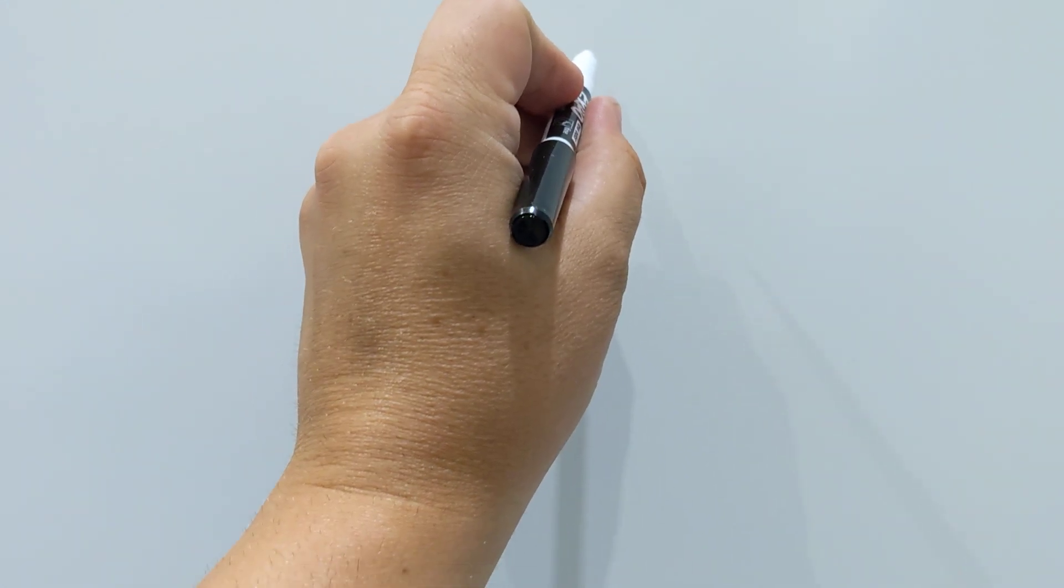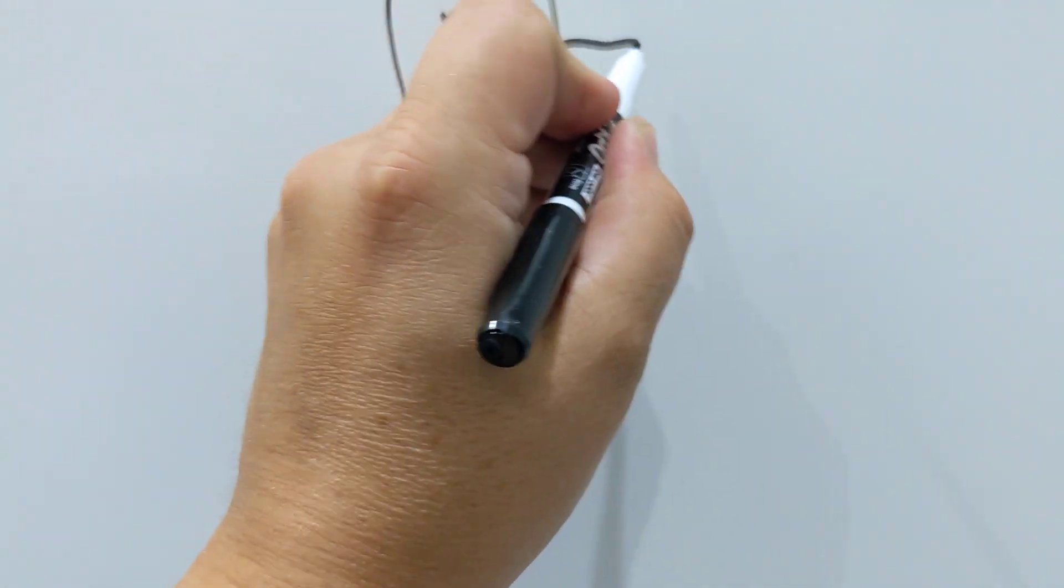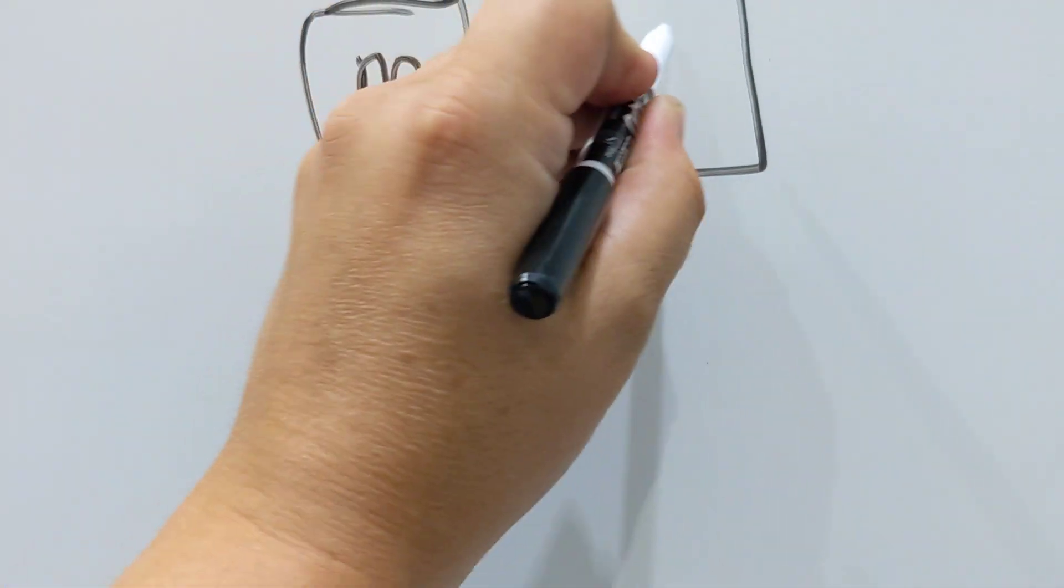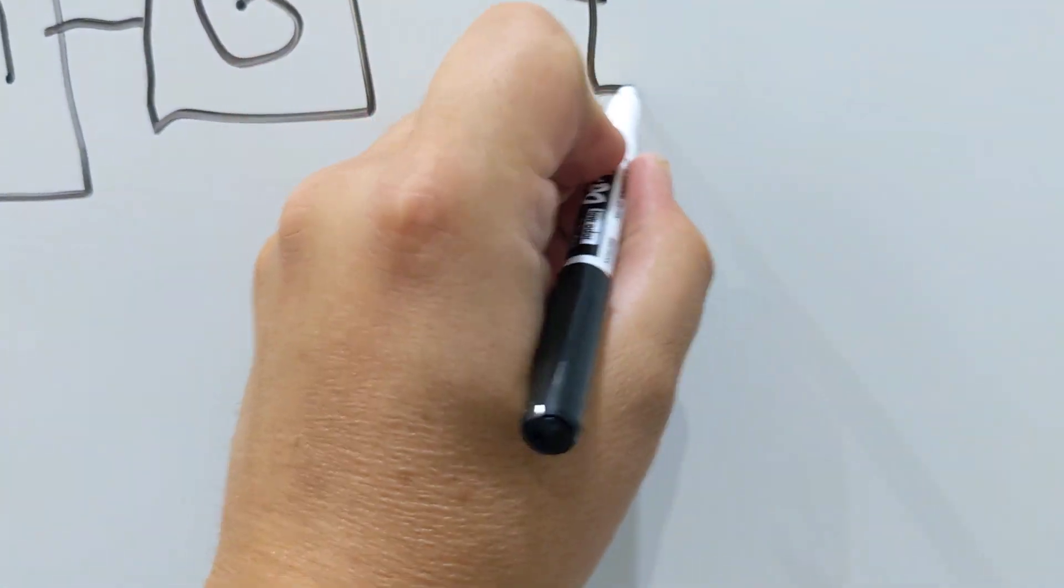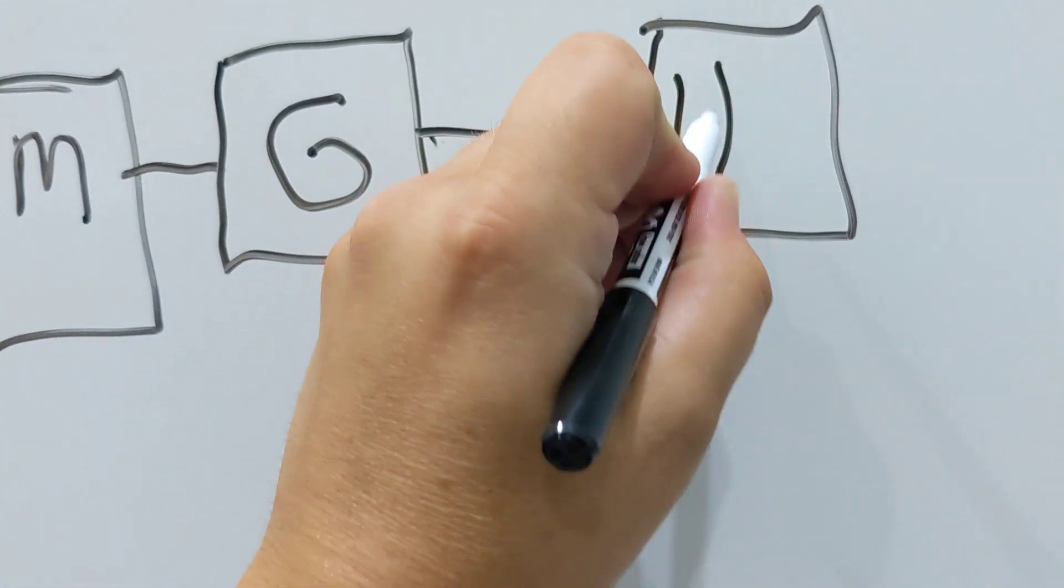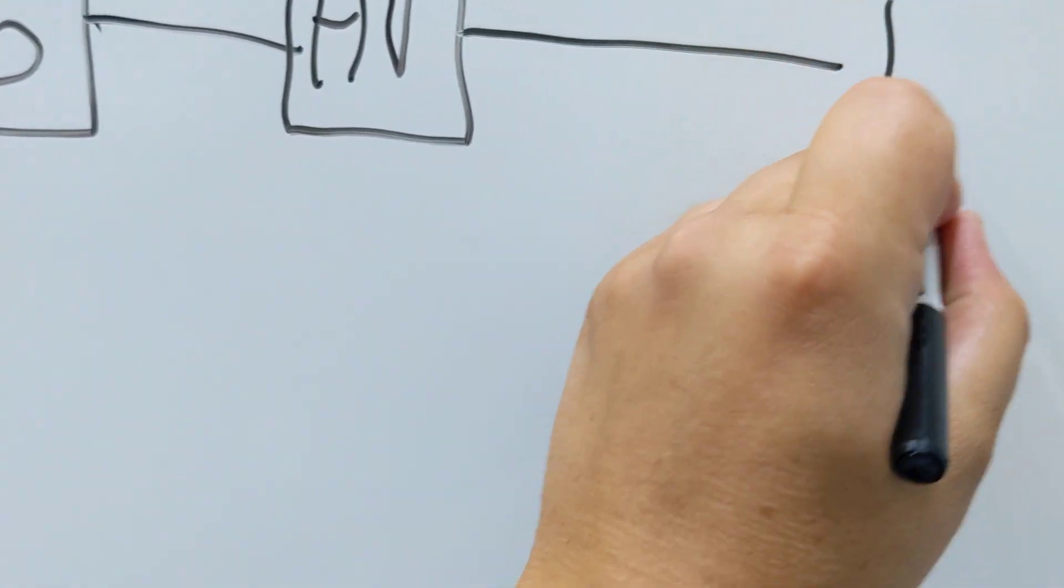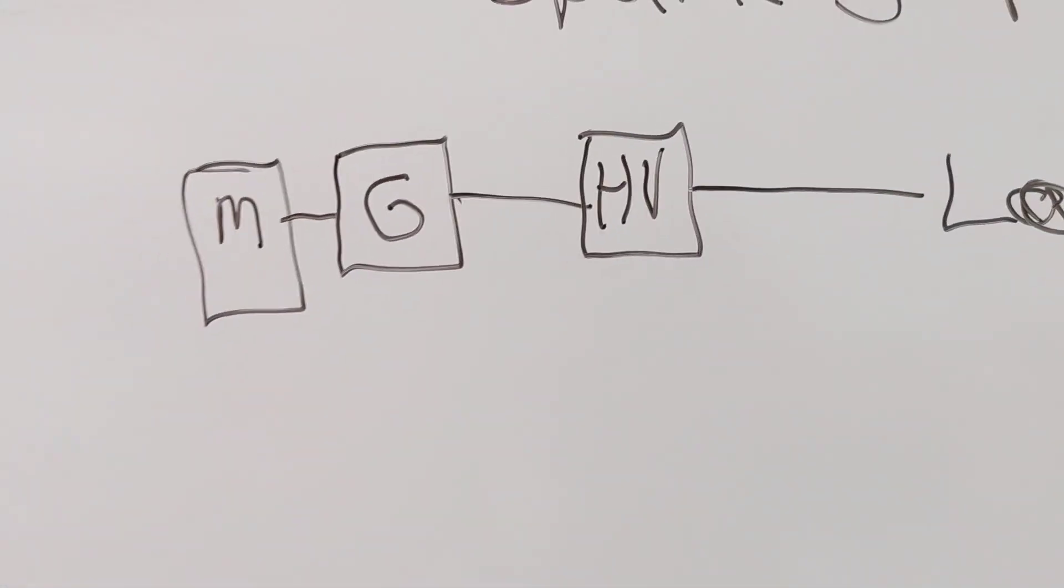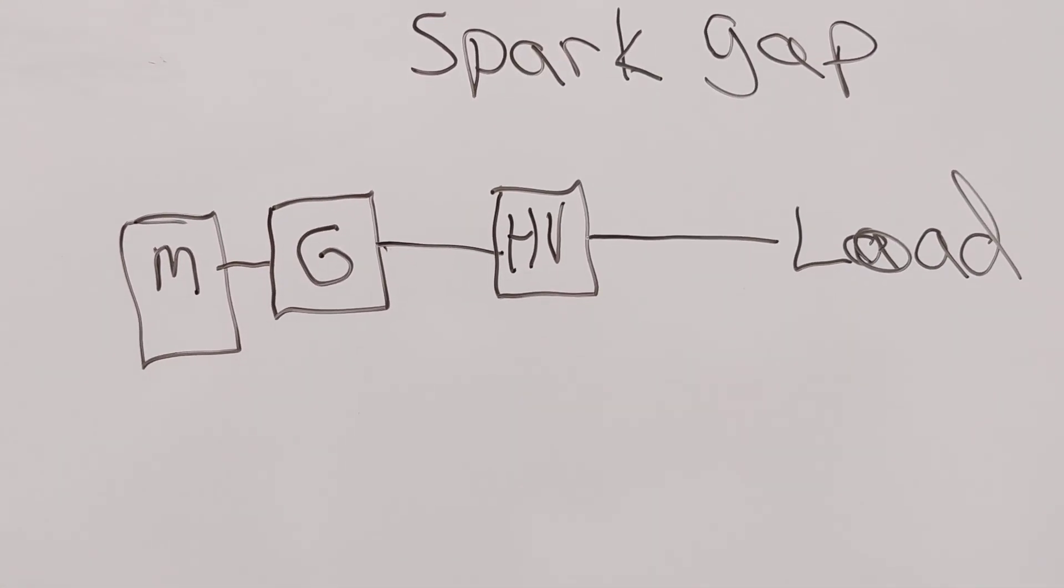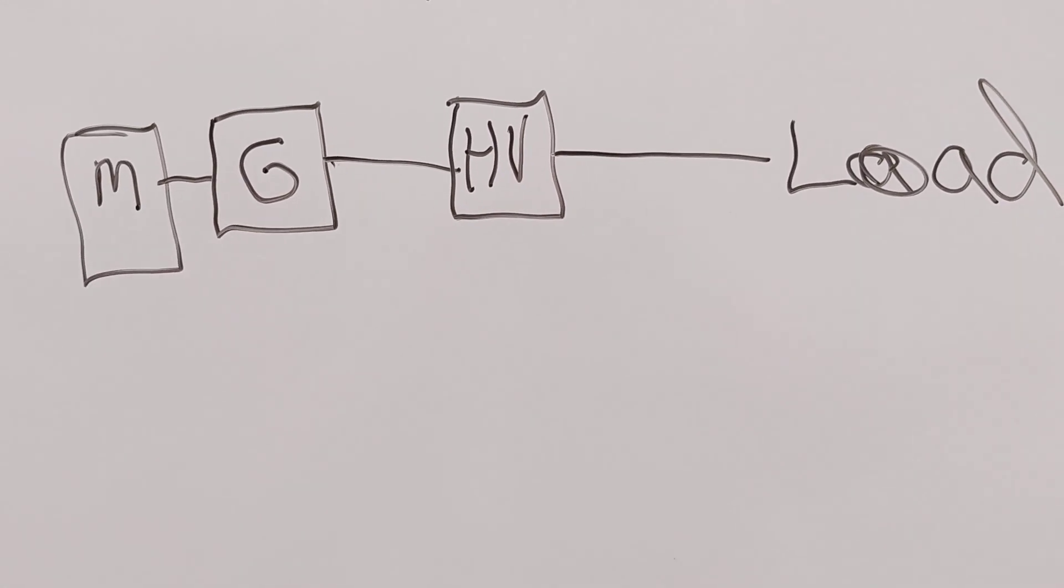Okay, so he's got a generator. So he's got a motor connected to a generator. So he's got the motor and the generator. And then from there, it goes to a high voltage transformer. And then from the high voltage transformer, it goes to a load.